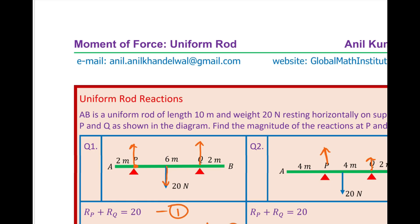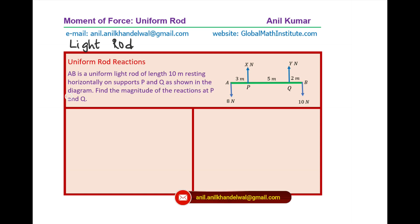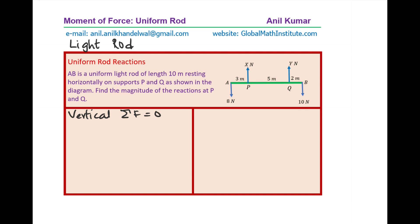Now let's take the next example, where we are neglecting the mass — so the weight is zero and we call this a light rod. AB is a uniform light rod of length 10 meters resting horizontally on supports P and Q. Find the magnitude of reactions at P and Q. Instead of a center force for weight, we are given two forces at A and B: 8 and 10 newtons. Resolving vertically, X plus Y should equal 8 plus 10, which is 18. That becomes our first equation.